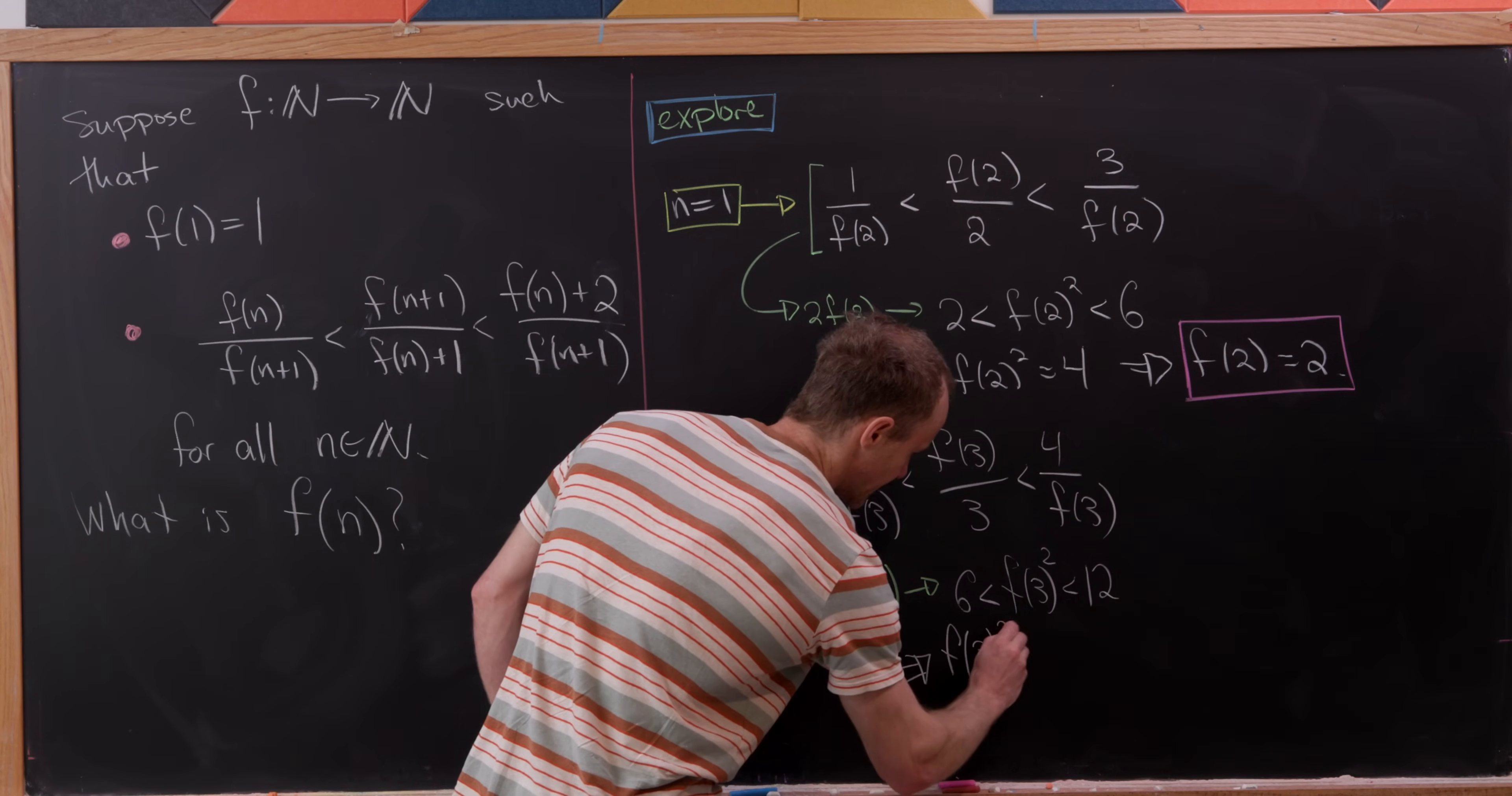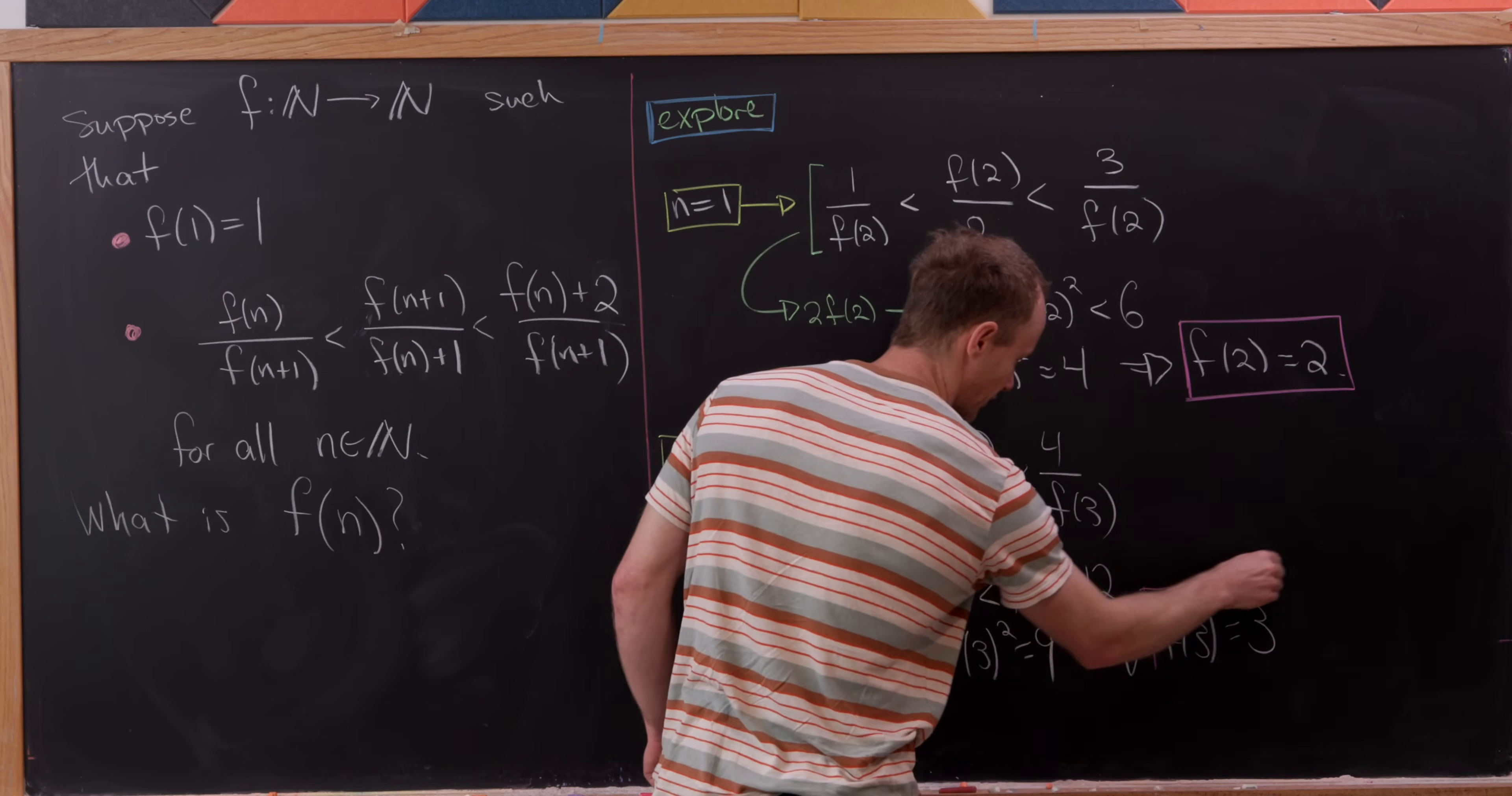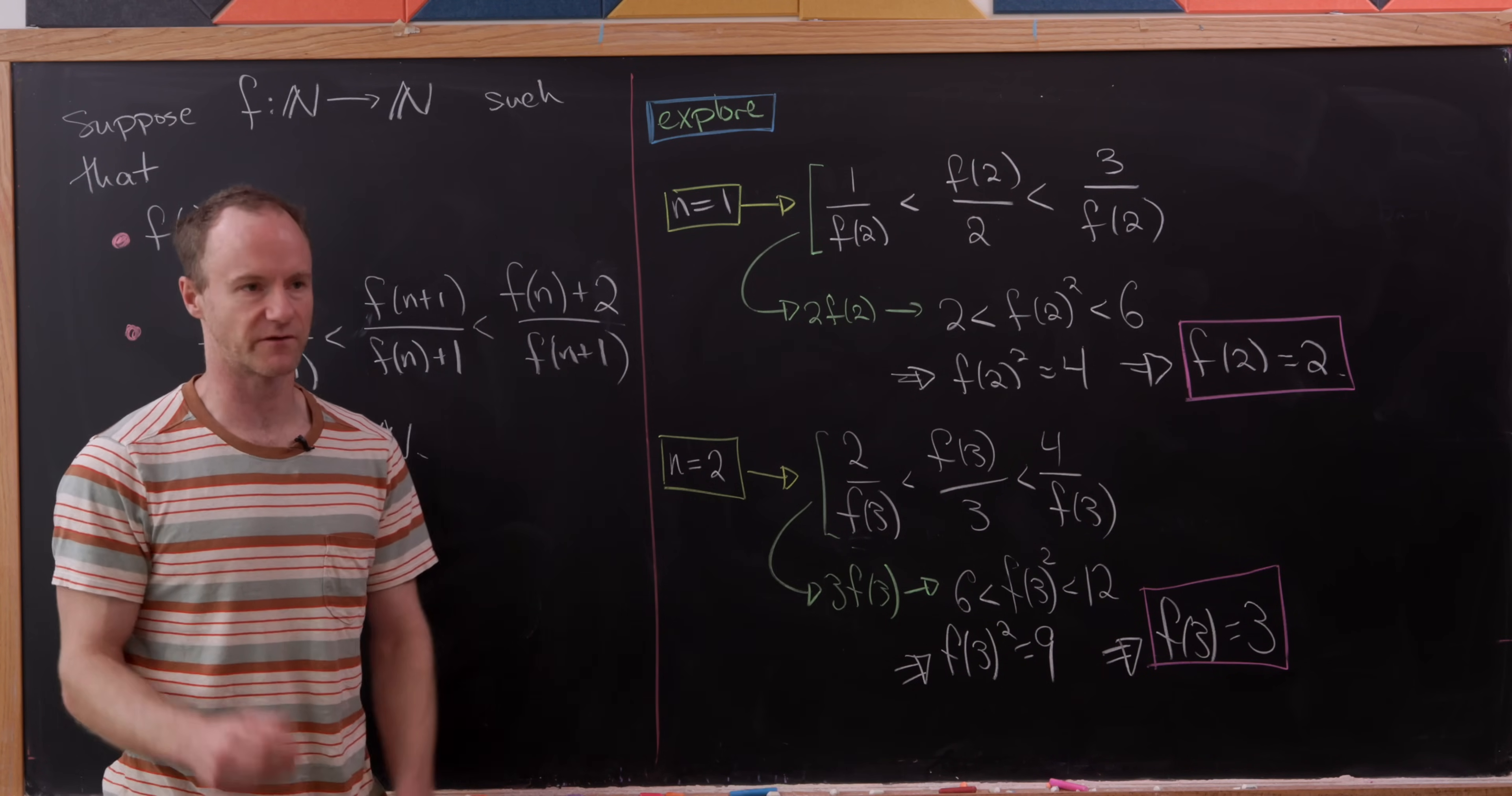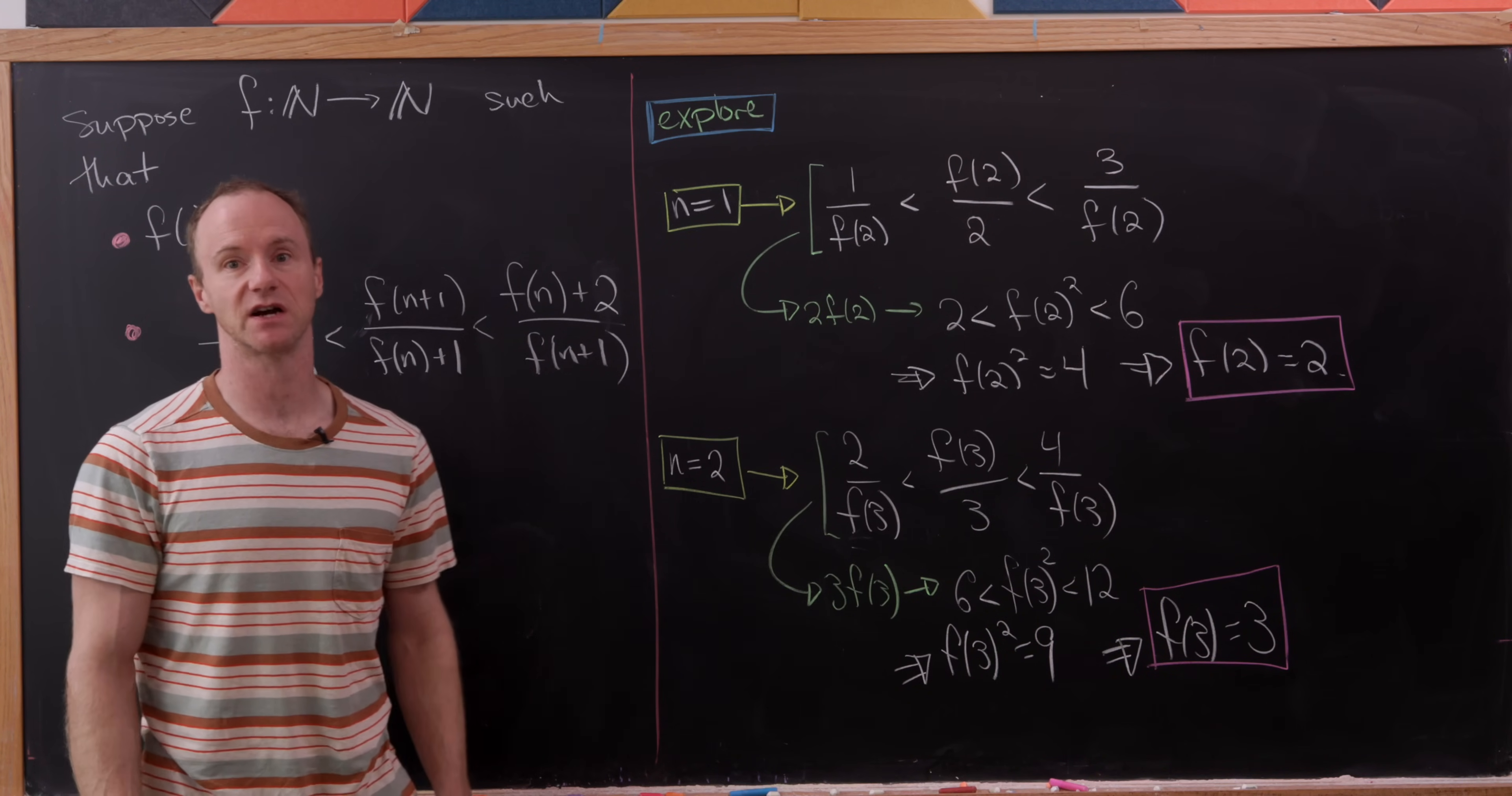So we have f of three squared is equal to nine, which tells us that f of three is equal to three. So just by exploration we see the first three values here satisfy this maybe typical guess for a functional equation or a functional inequality problem where you always end up with the identity function.